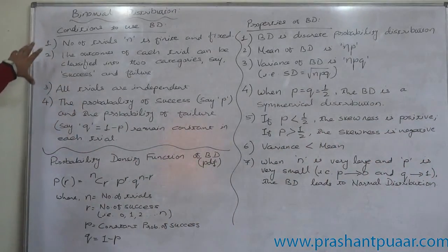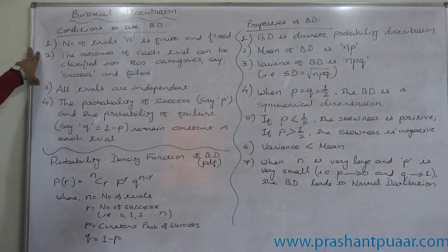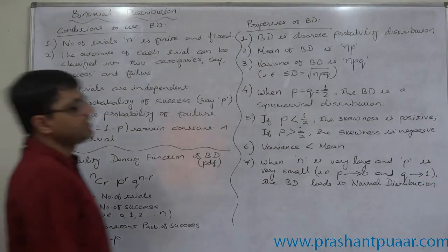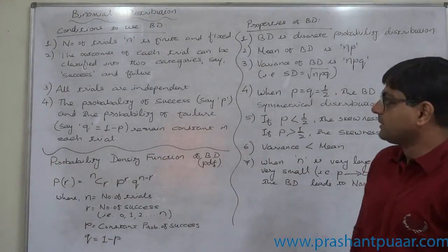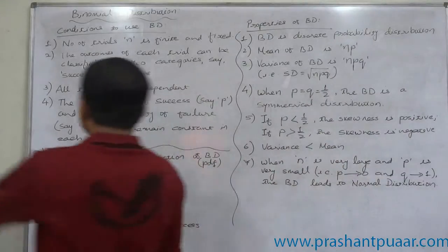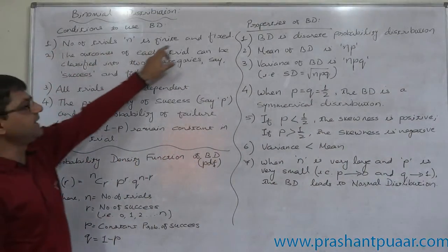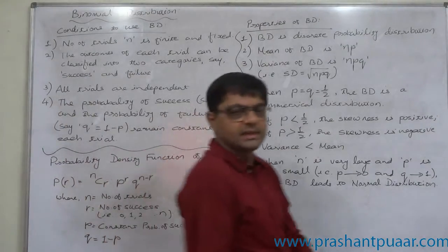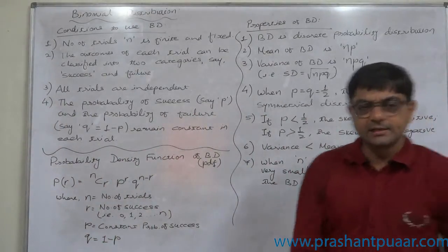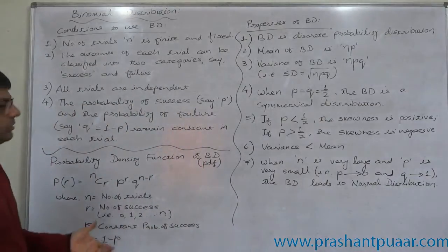If the data or the experiment follows some conditions, then we can use binomial distribution to get the probabilities. The first condition is the number of trials N is finite and fixed. That means the number of trials are limited — you can say limited to 20, 25, or 30, not more than that.